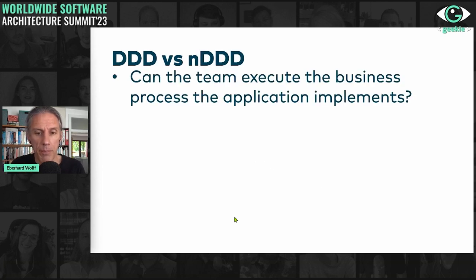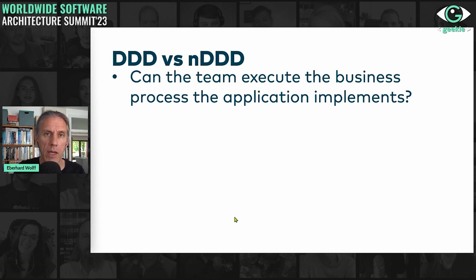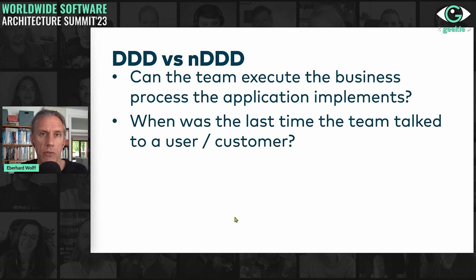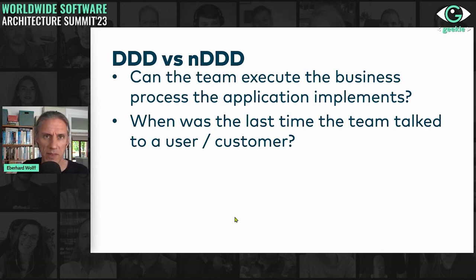You could ask the team to execute the business process the application implements. If they are able to do so, it means they really understand the domain. Another question is: when was the last time someone on the team talked to a user or customer? You want to talk to both the users and their managers — managers can tell you what the application is for in business terms, while users give you the detailed level of what's going on.